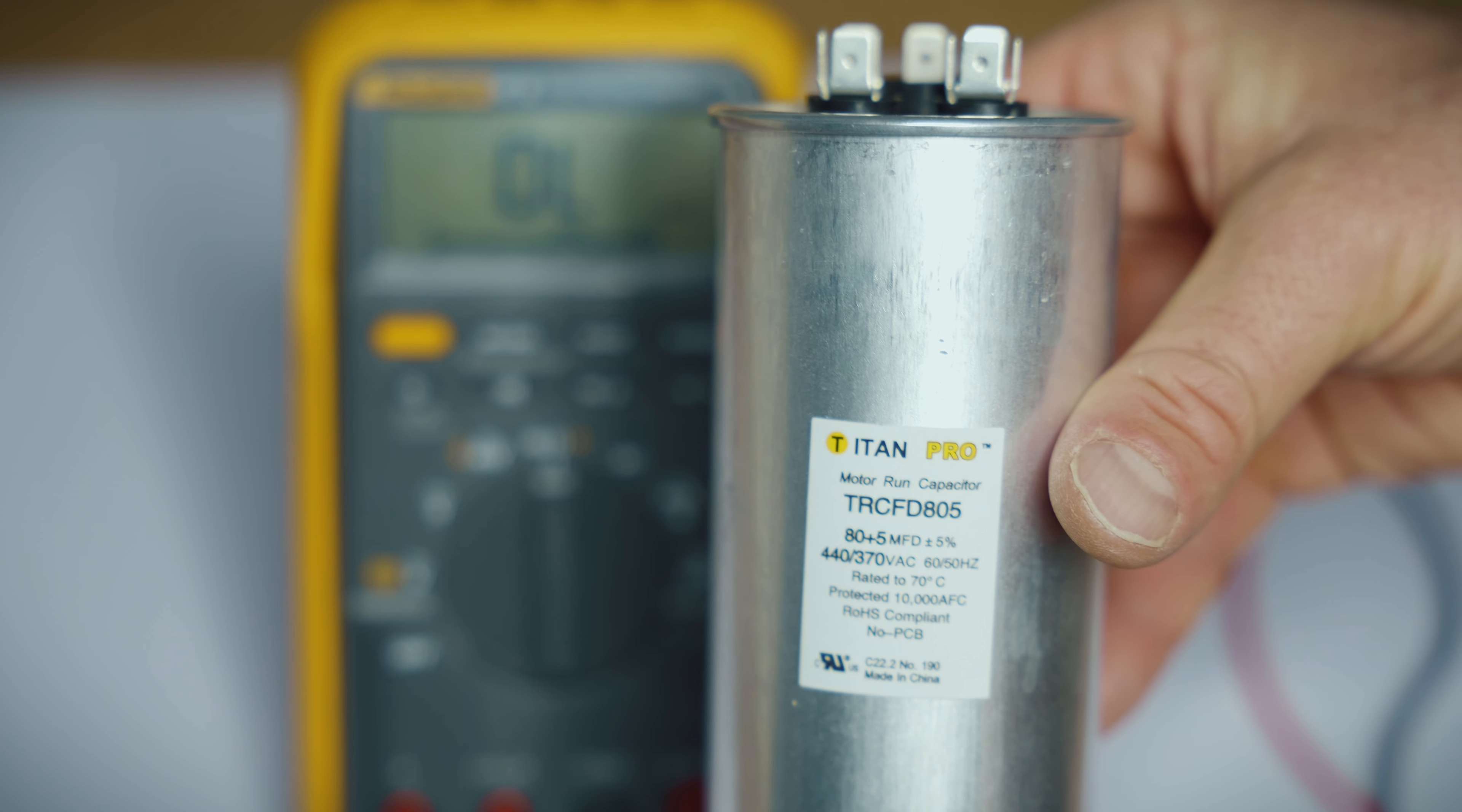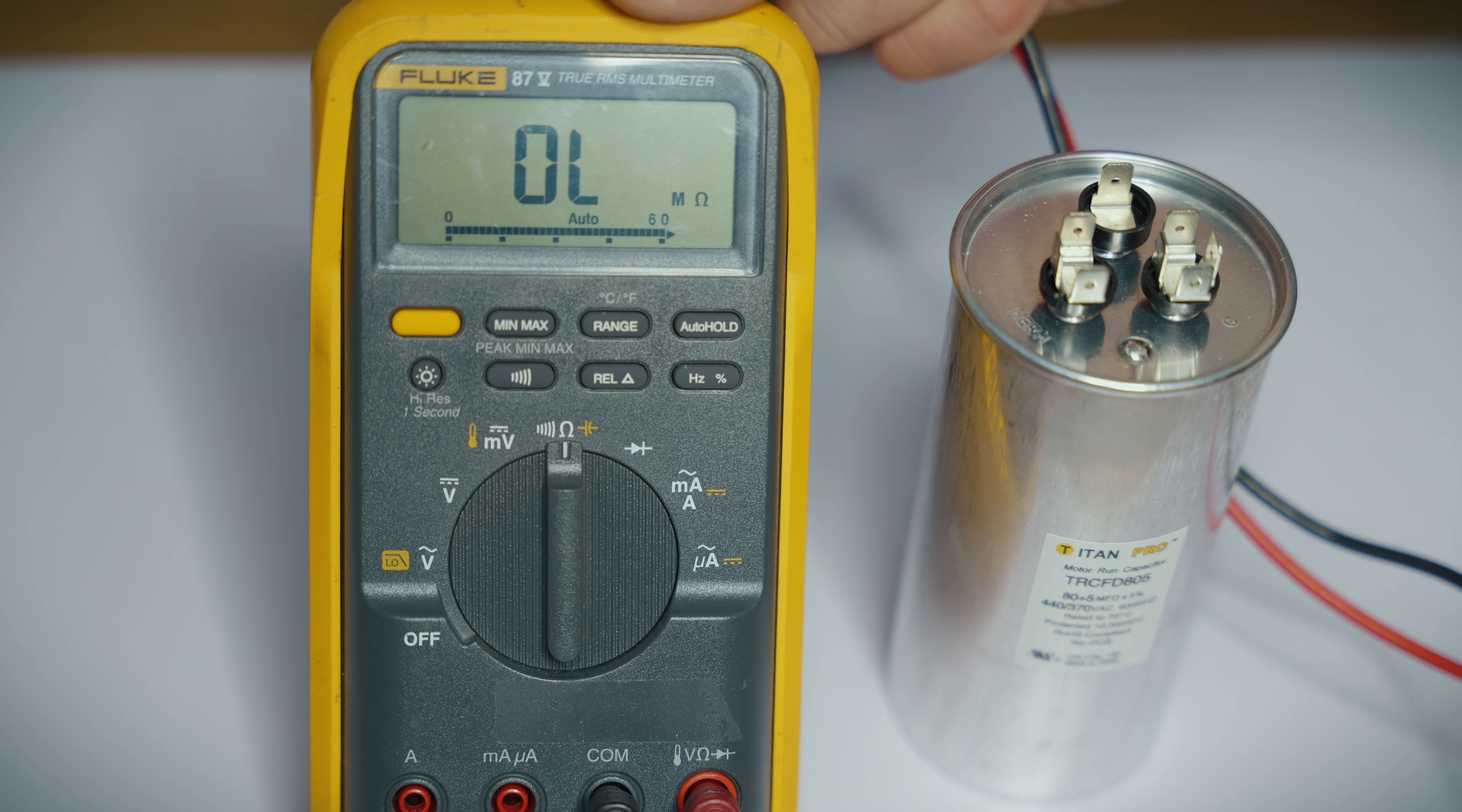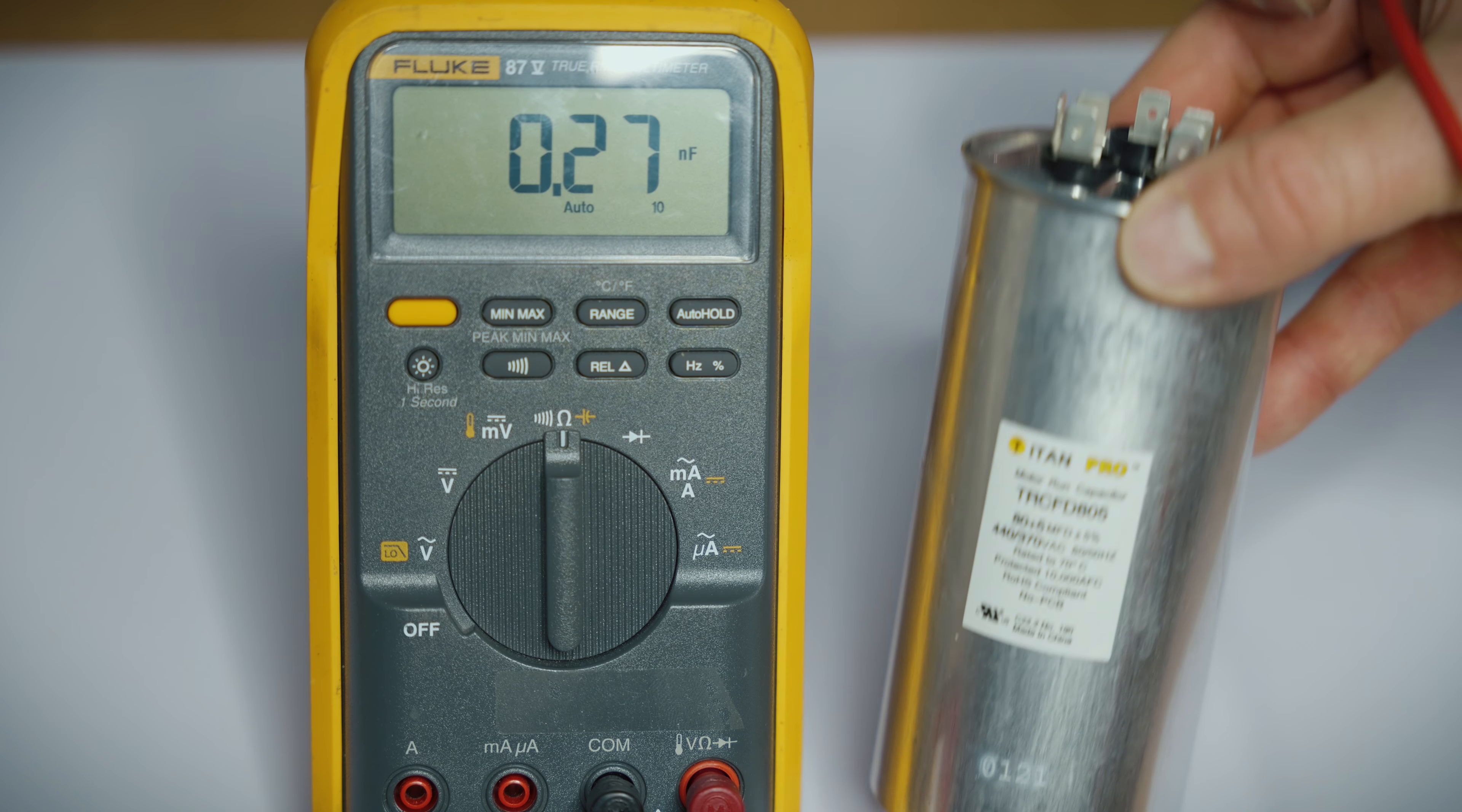Our next setting is going to be the orange capacitor, and that's the symbol with a straight line and you have a curved to a flat line. Now, the capacitor setting is most likely going to be used to check an AC start or run capacitor for your air conditioning system.